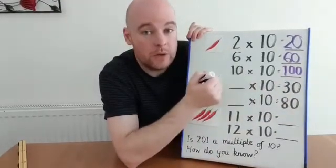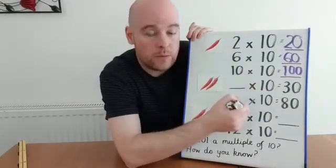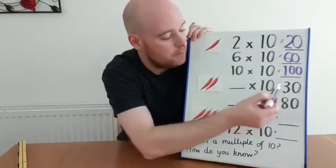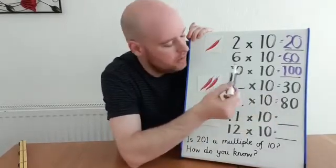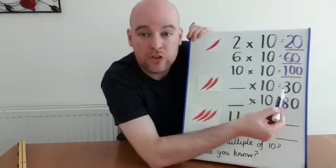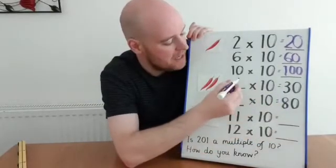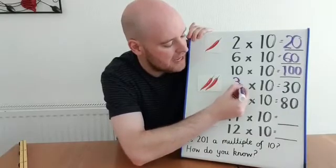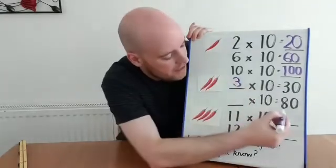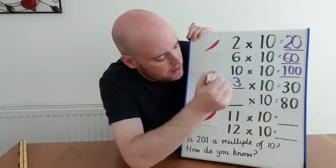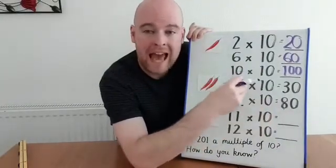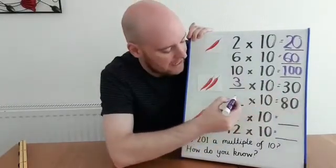Who had a go at chilli 2? Did you manage to work out which numbers were missing? What do I have to multiply by 10 to give me a product of 30? I can see that this answer has got 3 tens, so it must be 3 lots of 10 — that must be my number sentence: 3 times 10 is 30. How many tens has my answer got here? That's got 8 tens, so that must be 8 times 10 equals 80.